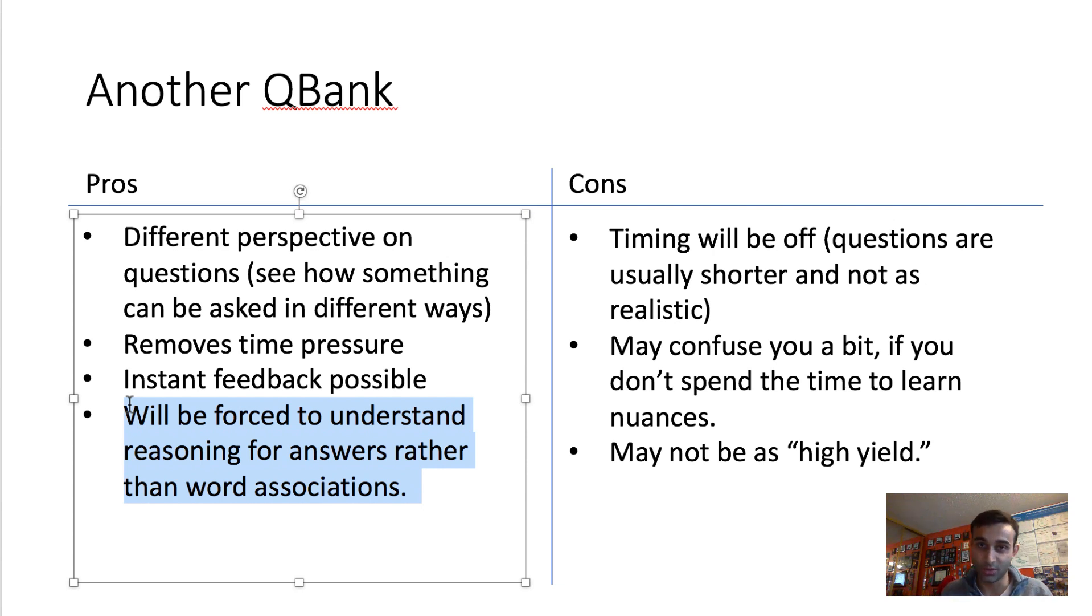And the last thing is you will be forced to understand the reasoning for questions, right? When you do a secondary QBank, you're going to be asked questions from all the different angles. And because you'll never be asked the same question twice because it's an entirely different QBank, you'll be forced to understand the reasoning as opposed to memorizing associations, which is what I think you would get if you did UWorld twice. And again, I'm speaking purely based on experience because I do have friends that have done UWorld twice.